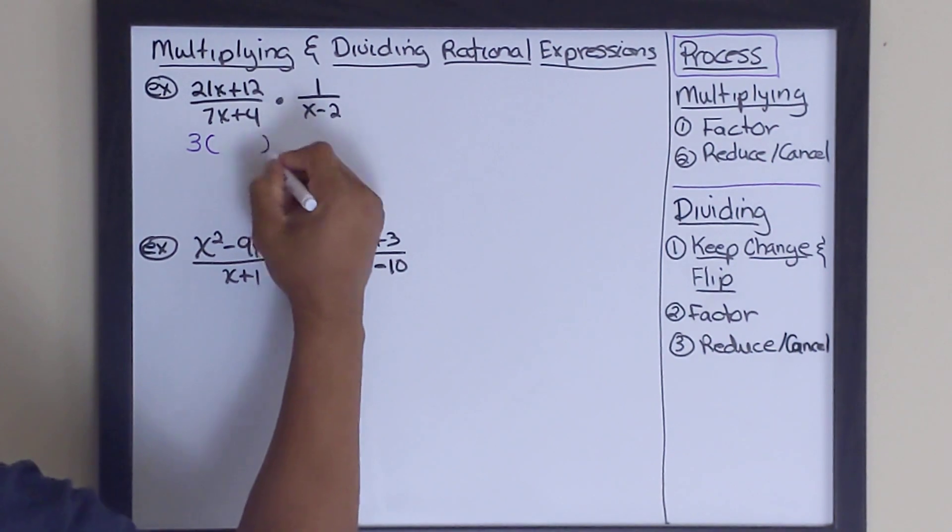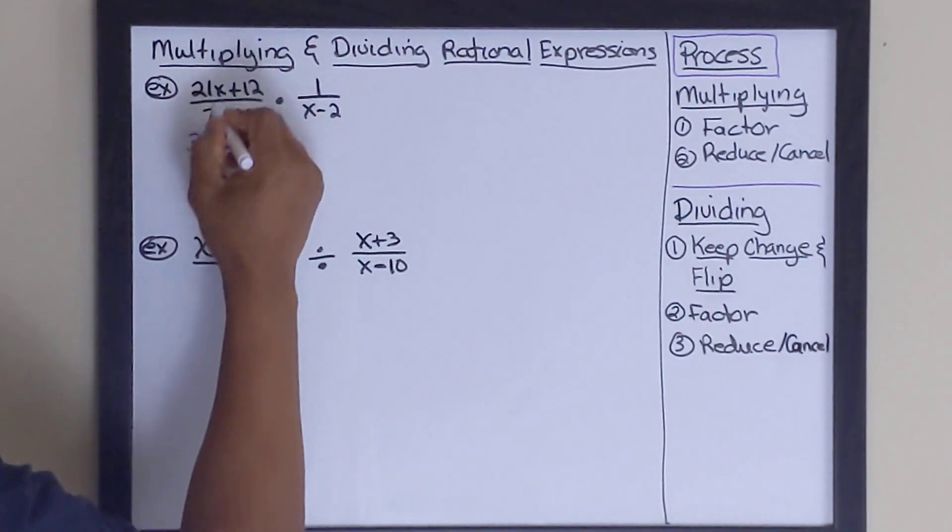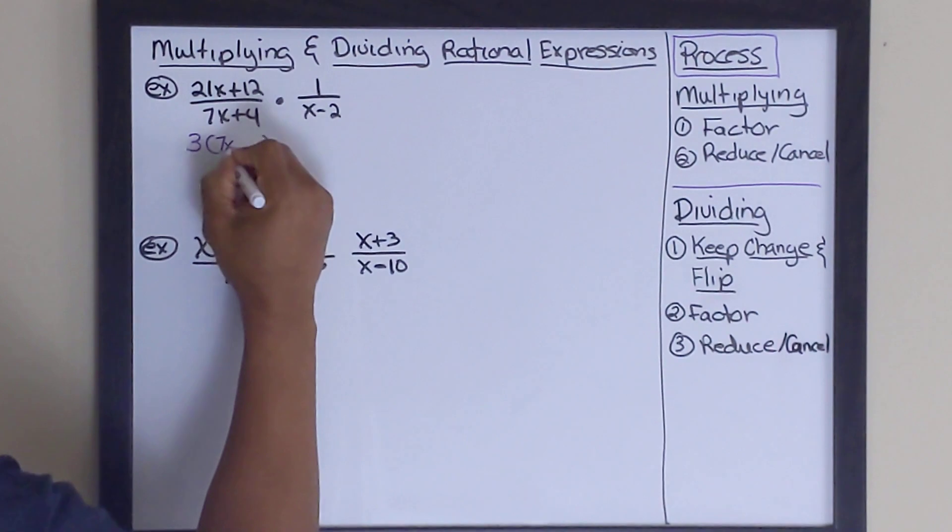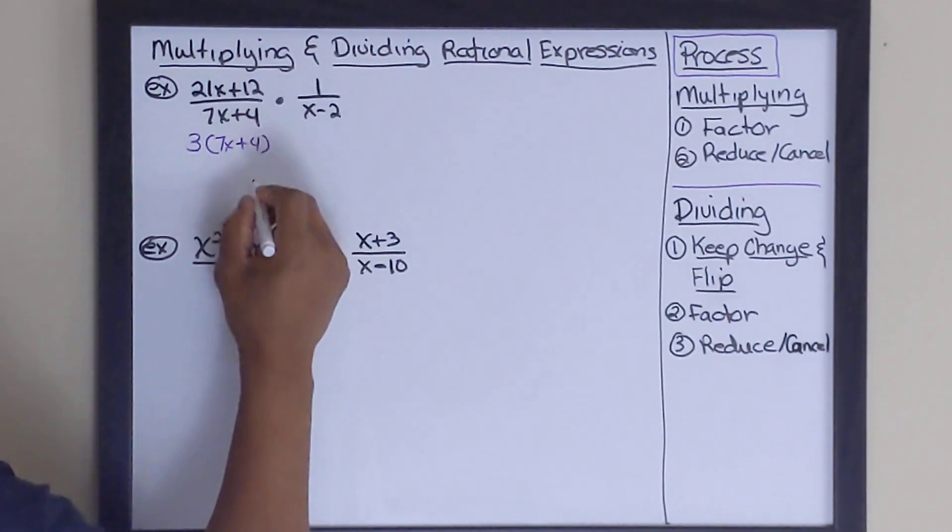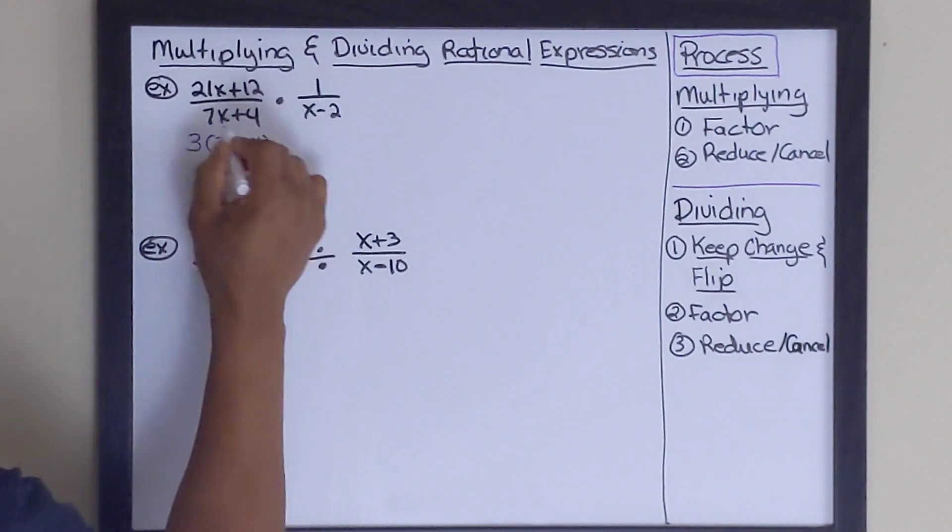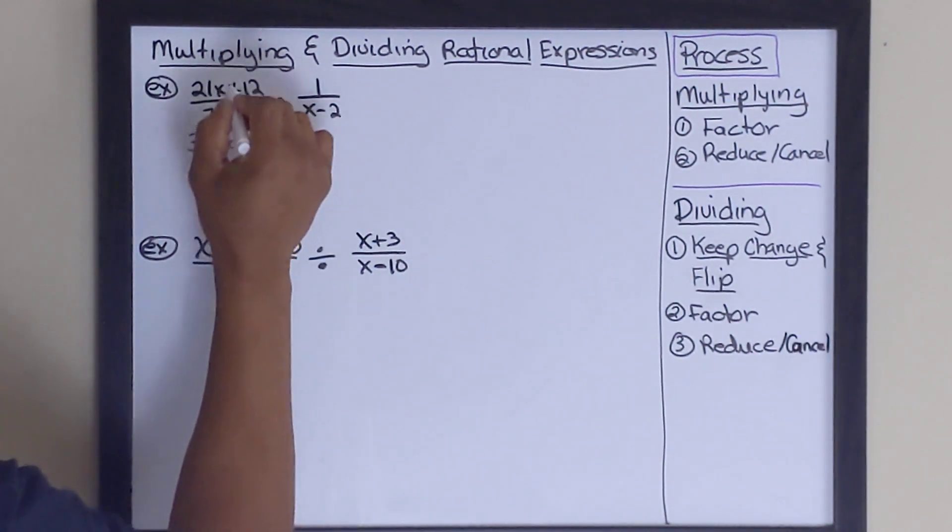And then what's left is 21x divided by 3 would be 7x. And 12 divided by 3 is going to be 4. So that's what's left. This is what our numerator is broken down.